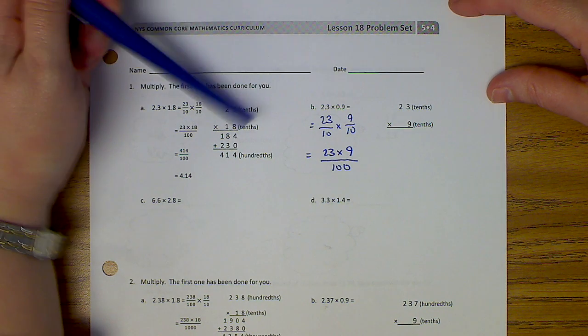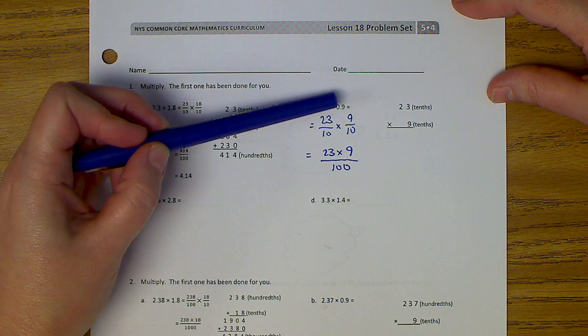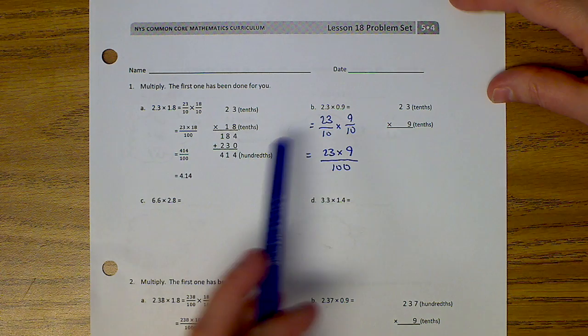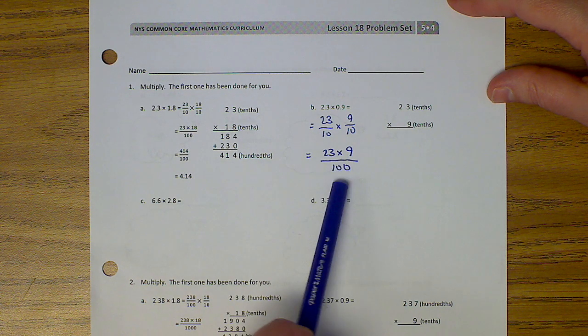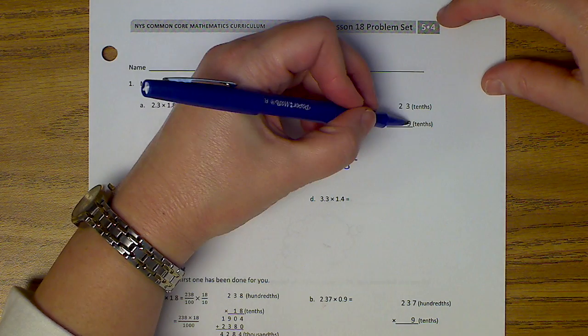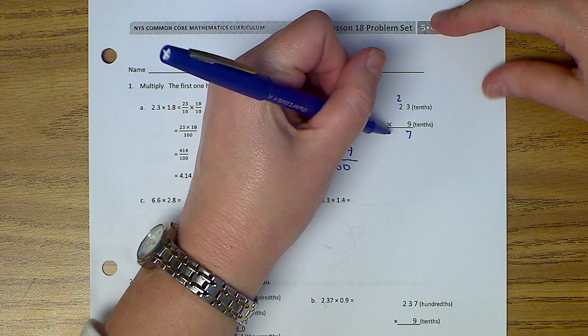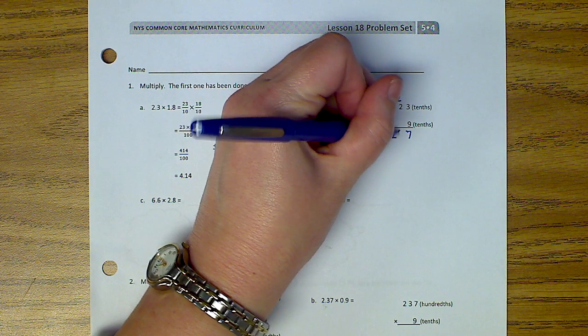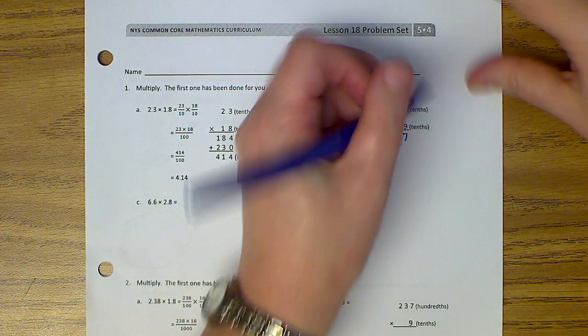Okay, so I've gone over and I've done this. I saw I have 2 and 3 tenths, so I turned it into 23 tenths. My 9 tenths became 9 tenths. And then you set it up just like you've been doing. Multiply the numerators. 23 times 9, 10 times 10 is 100. Then you come over here. 9 times 3 is 27. 9 times 2 is 18, with the 2 would be 20. 10th times 10th equals, so it's 207 hundredths.